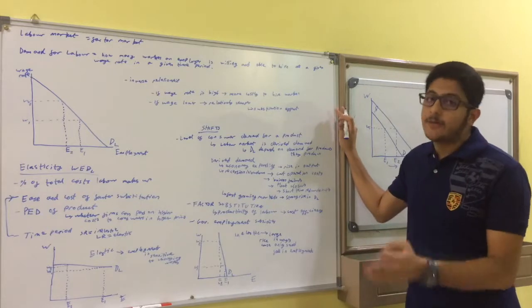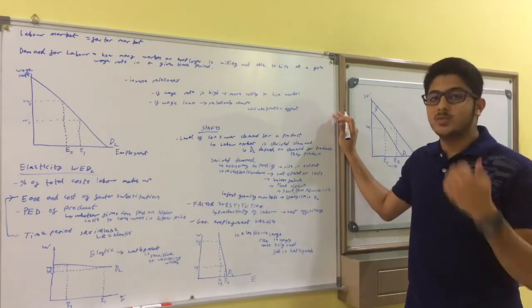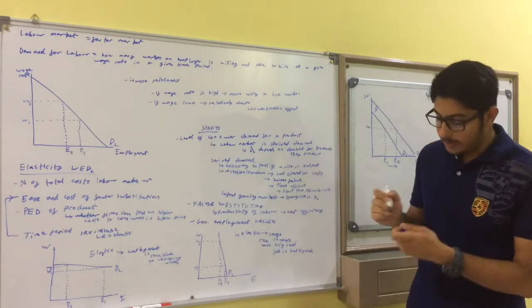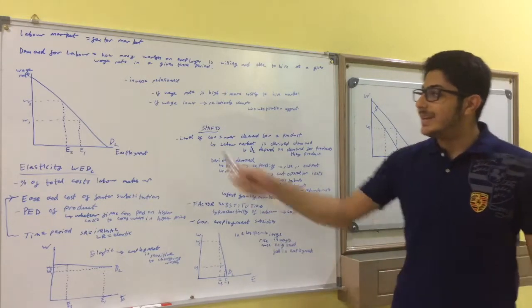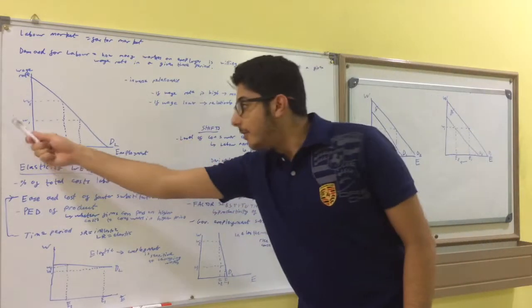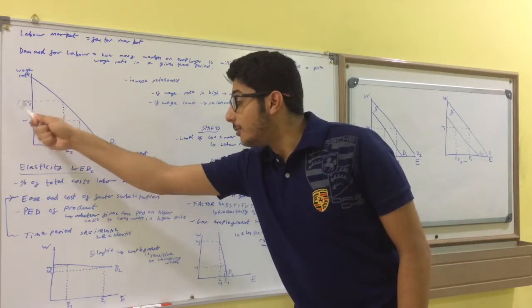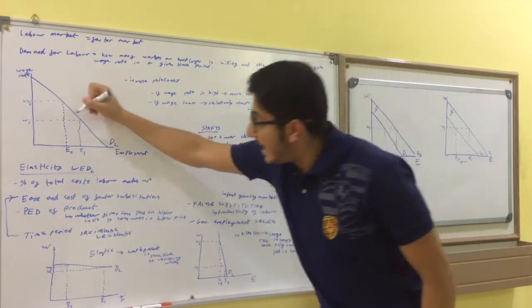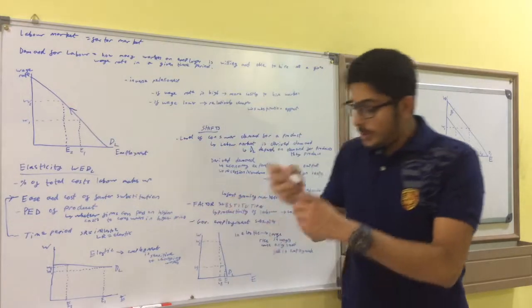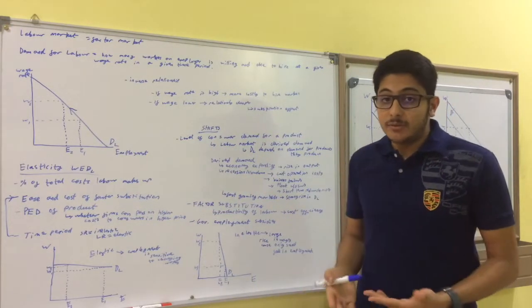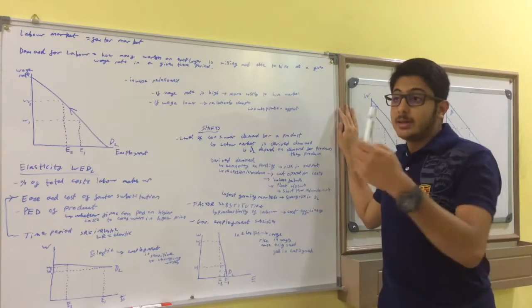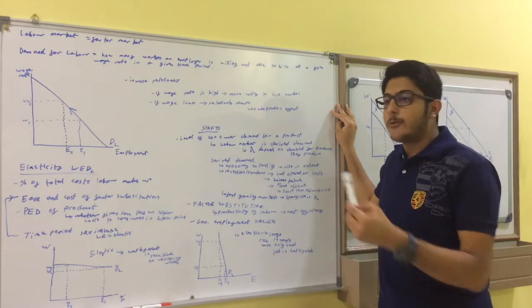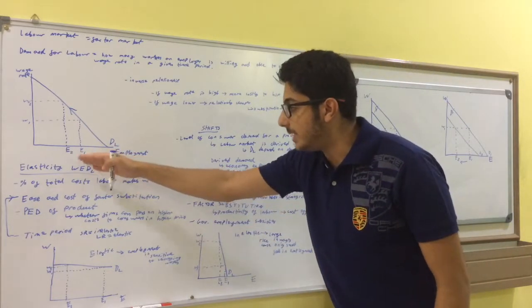The demand for labor is defined as how many workers an employer is willing and able to hire at each given wage rate in a given time period. So, demand for labor is inelastic. If wages go up, for example from W1 to W2, then demand for labor will contract. Because now, the cost of production of a firm has increased because the cost of labor is now higher. And so, firms want to reduce these costs by reducing the number of workers. Employment falls from E1 to E2.